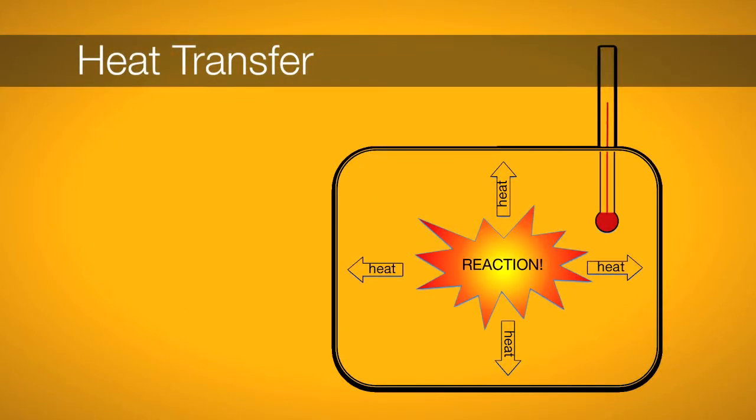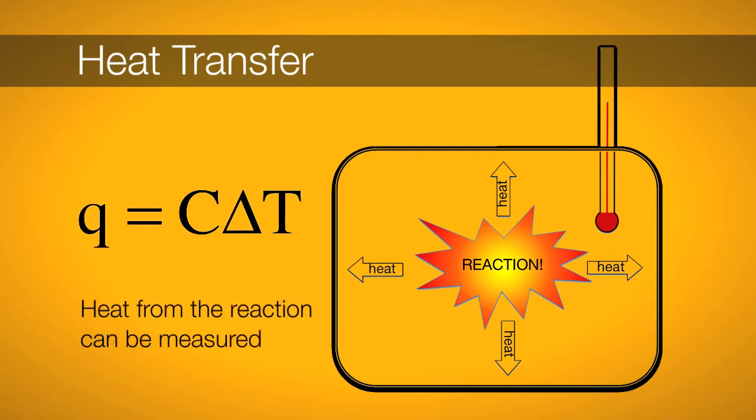Heat can be measured by noting the basic relationship of Q equals C delta T, where C is the heat capacity and delta T is the change in temperature of the material. Simply speaking, the change in internal energy or enthalpy